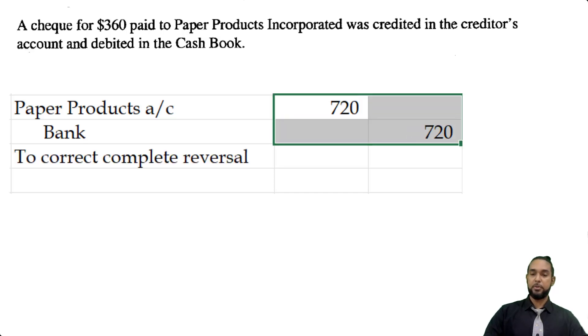This is complete reversal. Again, we use double the amount because one, we have to cancel the incorrect debit and credit that we made. And then enter the correct debit and credit that should have been made. And that's it for this question.